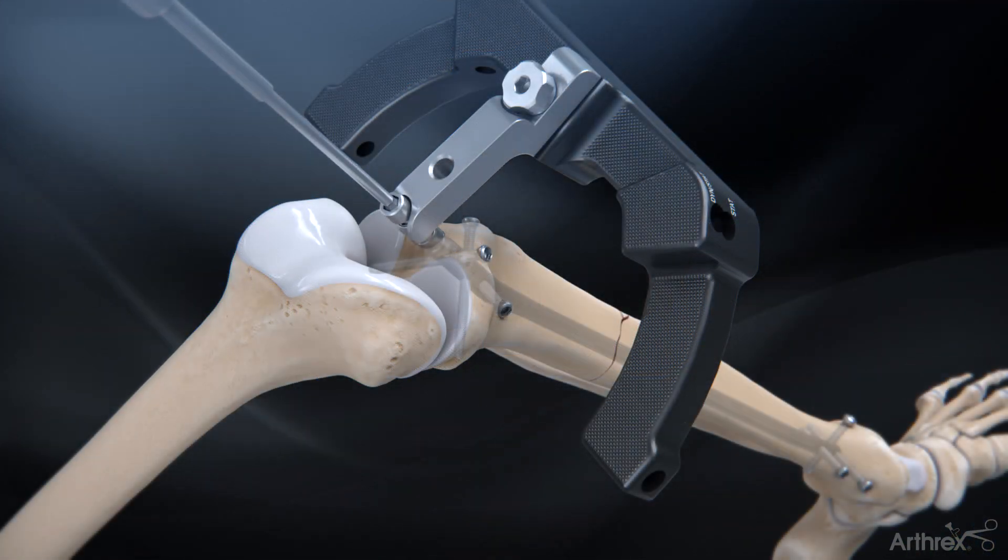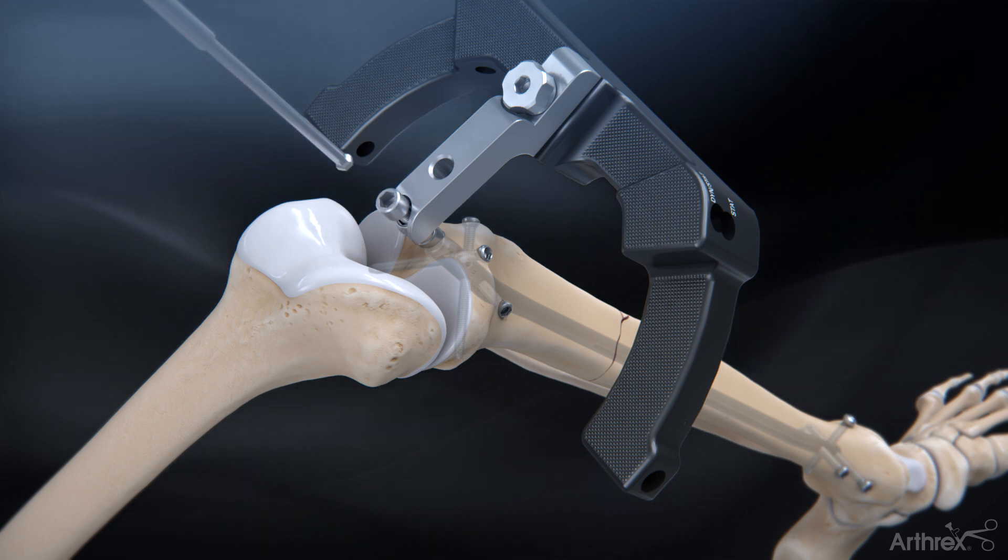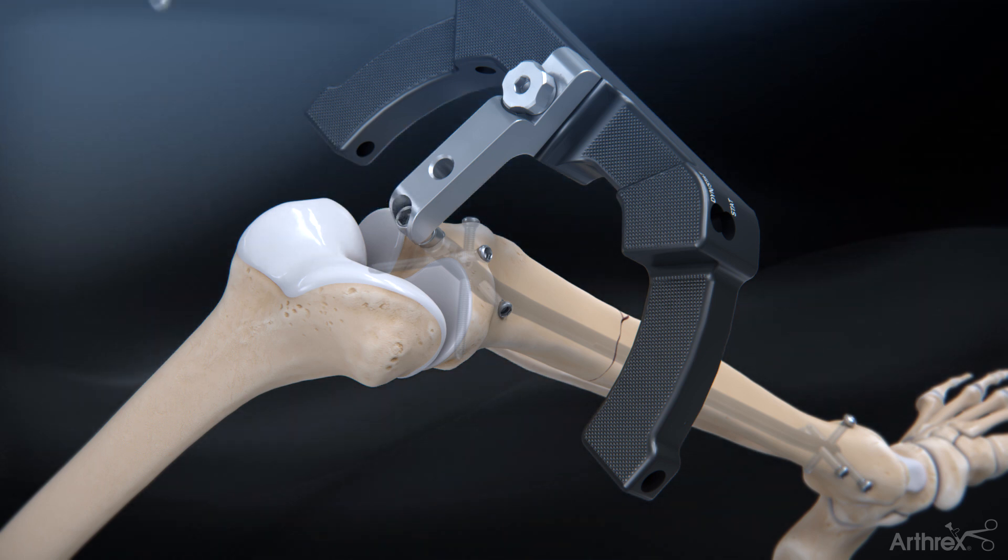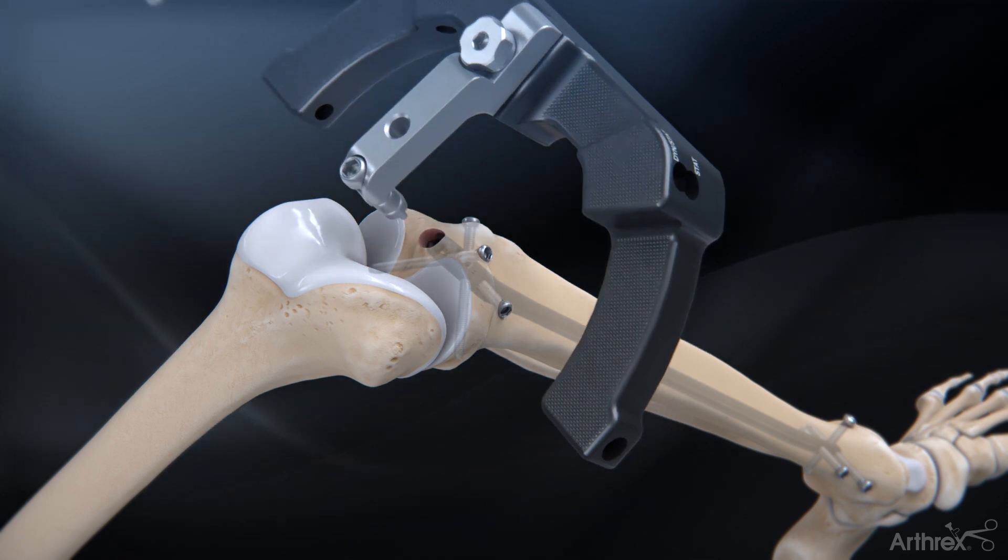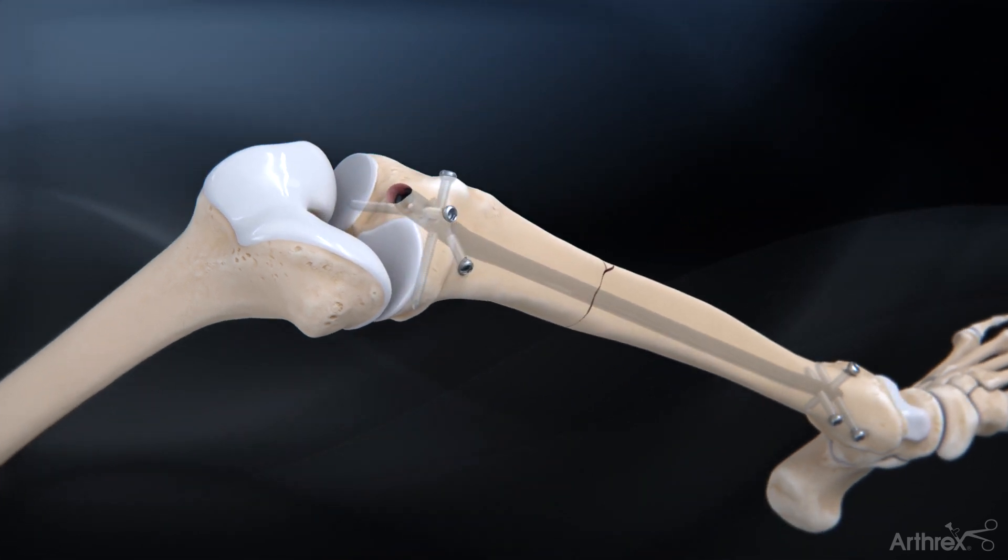Unthread and remove the compression bolt using the hex driver. Finally, unthread the locking bolt using the ball hex driver and remove the targeting arm assembly to complete the procedure.